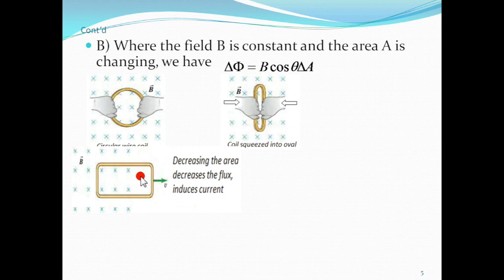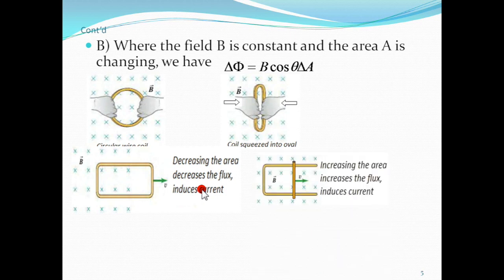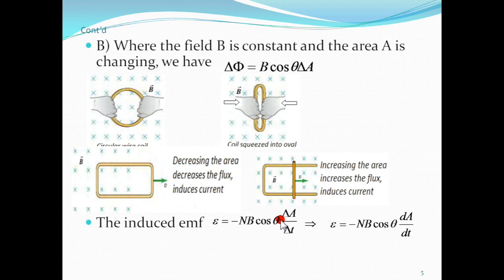The area is changing and the flux is changing. There is an induced electromotive force. The decreasing area decreases the flux and the induced current. The basic formula is B cos theta, delta A over delta t. If the area is changing as a function of time, the derivative is dA by dt.